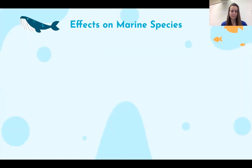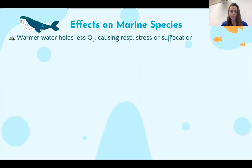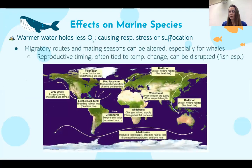How does this affect the things that live in the ocean? As we've discussed, warmer water holds less oxygen, so lower dissolved oxygen can cause respiratory stress or suffocation of marine organisms. Another major impact is that migratory routes and mating seasons can be altered, especially for marine mammals. Reproductive timing is often tied to temperature change and can be altered by these changes in temperature.